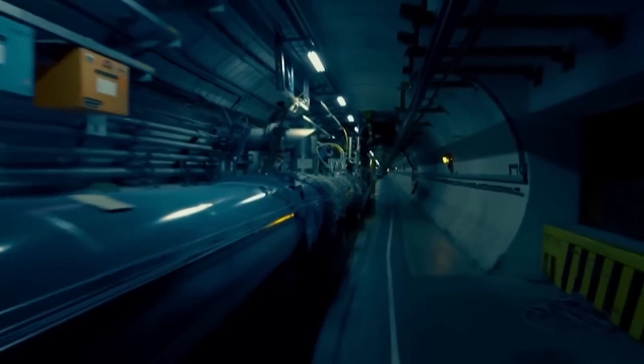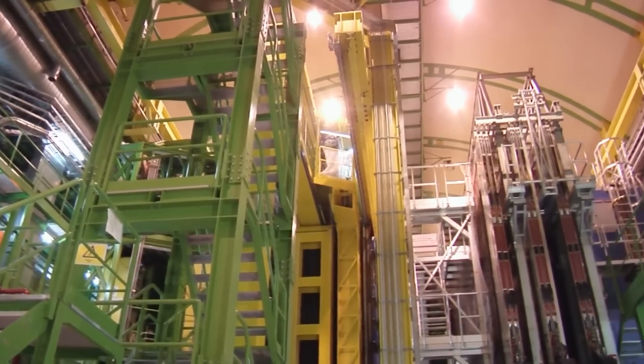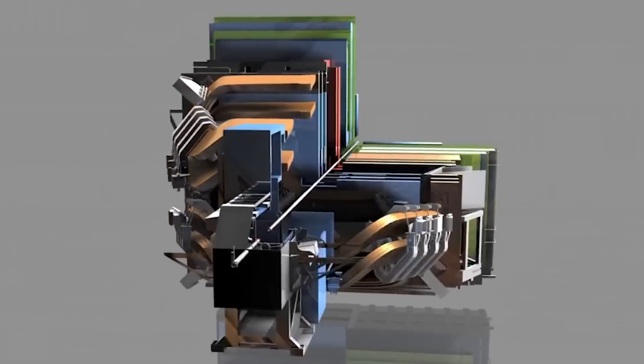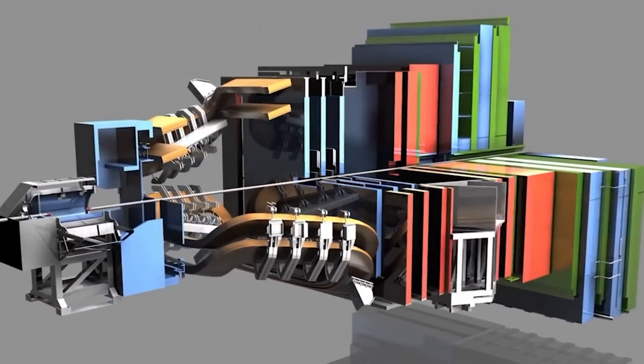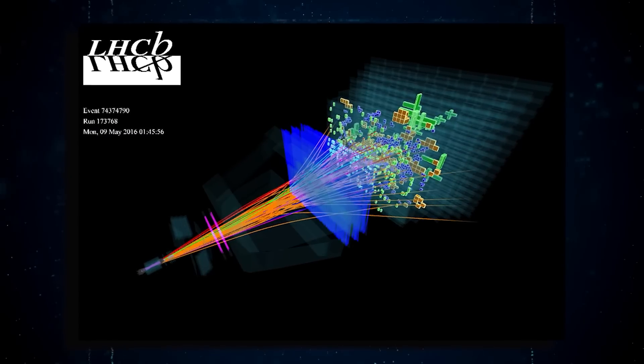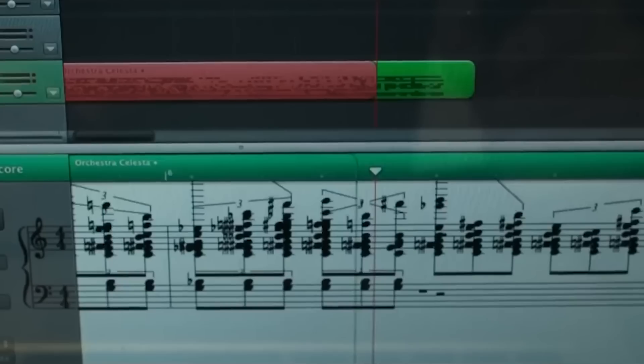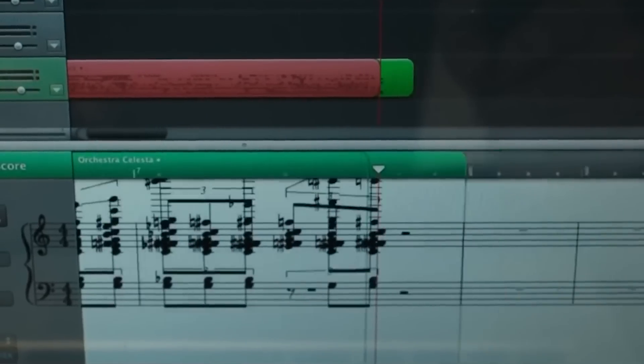However, for run 3 and beyond, LHCB has replaced the entire trigger system, removing the hardware trigger and instead reading out the whole detector at the full LHC bunch crossing rate of 40 megahertz. This change has allowed LHCB to utilize real-time analysis for selecting data, making the selection process more precise and flexible.